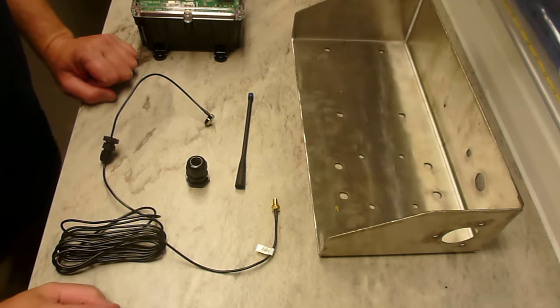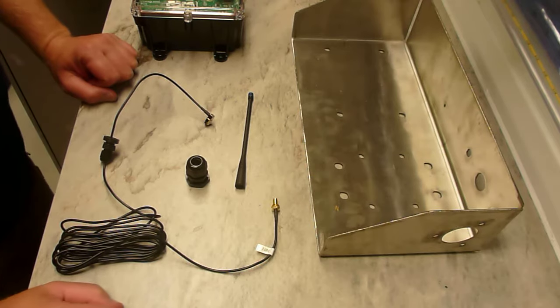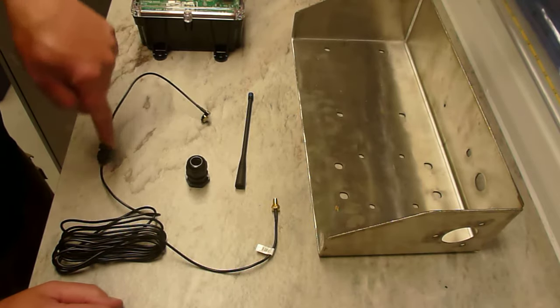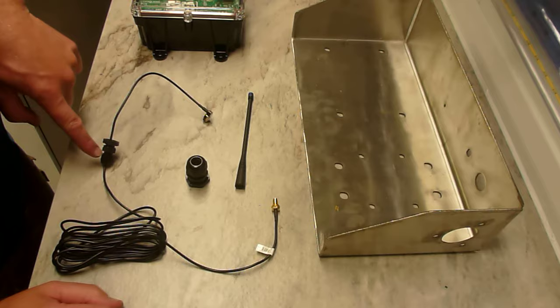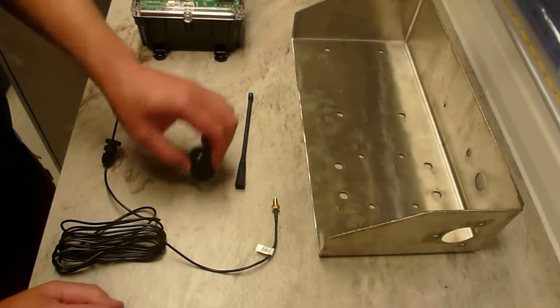Hi, this is Edward from ELP explaining how to install a LoRa aerial. What you get in the bag is the cable complete with a cable gland already on it, the aerial, and a cable gland.